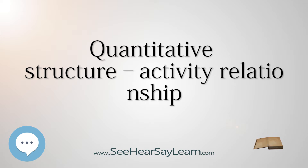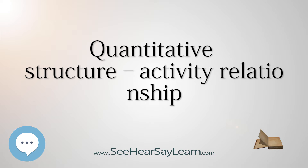As an example, biological activity can be expressed quantitatively as the concentration of a substance required to give a certain biological response. Additionally, when physico-chemical properties or structures are expressed by numbers, one can find a mathematical relationship, or Quantitative Structure Activity Relationship, between the two. A QSAR has the form of a mathematical model: Activity equals F of physiochemical properties and/or structural properties, plus error.